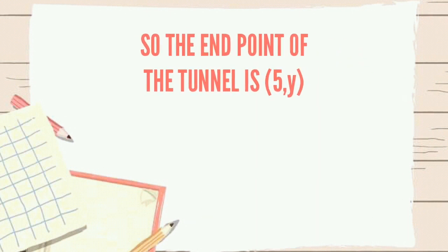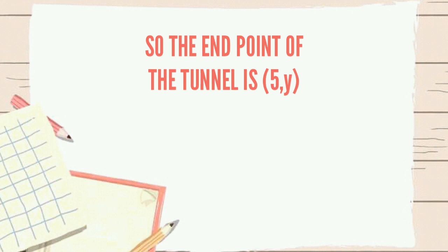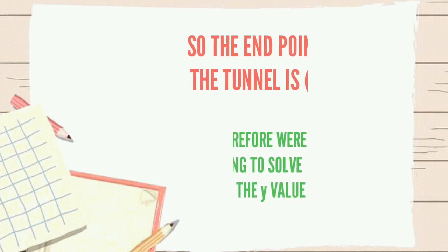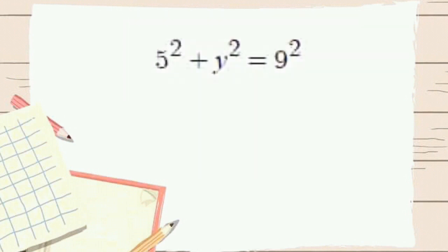So, the endpoint of the tunnel is (5, y). Therefore, we are going to solve for the y value. 5² + y² = 9². Transpose 5² to the right and it will become negative. 9² - 5² is 81 - 25 and it will equal 56. In order to cancel out the squared in the y, we are going to get the square root of both sides. The square root of y² is simply y and the square root of 56 is positive or negative 7.48.